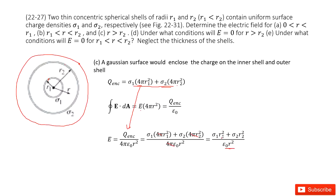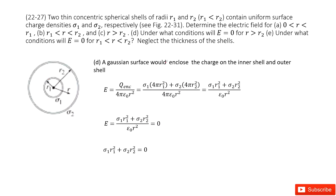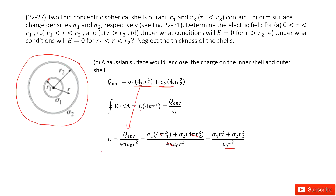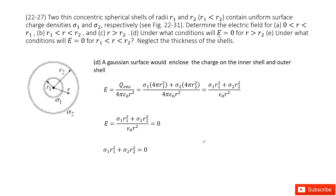Next, we find the condition for E to equal zero when r is greater than R2. From the result in case C, we want the numerator to equal zero. That means φ1·R1² + φ2·R2² = 0. That is the required condition.